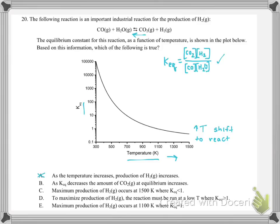B says as K_eq decreases, the amount of CO₂ at equilibrium increases. Smaller K means more reactants, and CO₂ is a product, so this doesn't make sense. C says maximum production of H₂ occurs at 1500 Kelvin where K_eq is less than 1. We know if K_eq is less than 1, that would be reactants favored, and H₂ is a product — so it's not going to be favoring H₂. That's not right.